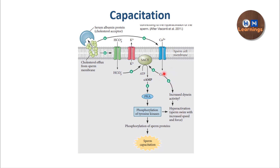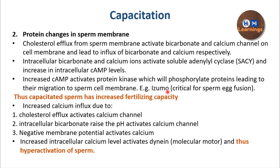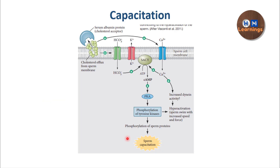Also, because of the increase in calcium level inside the sperm, the molecular motor dynein increases its activity, further contributing to hyperactivation. Because of phosphorylation of these proteins, some proteins present inside the membrane navigate to the sperm cell membrane — one such protein is the izumo protein, which is critical for sperm-egg fusion. Calcium influx occurs because of activation of the calcium channel due to cholesterol efflux; bicarbonate channels also activate the calcium channel, and negative membrane potential also activates calcium entry.